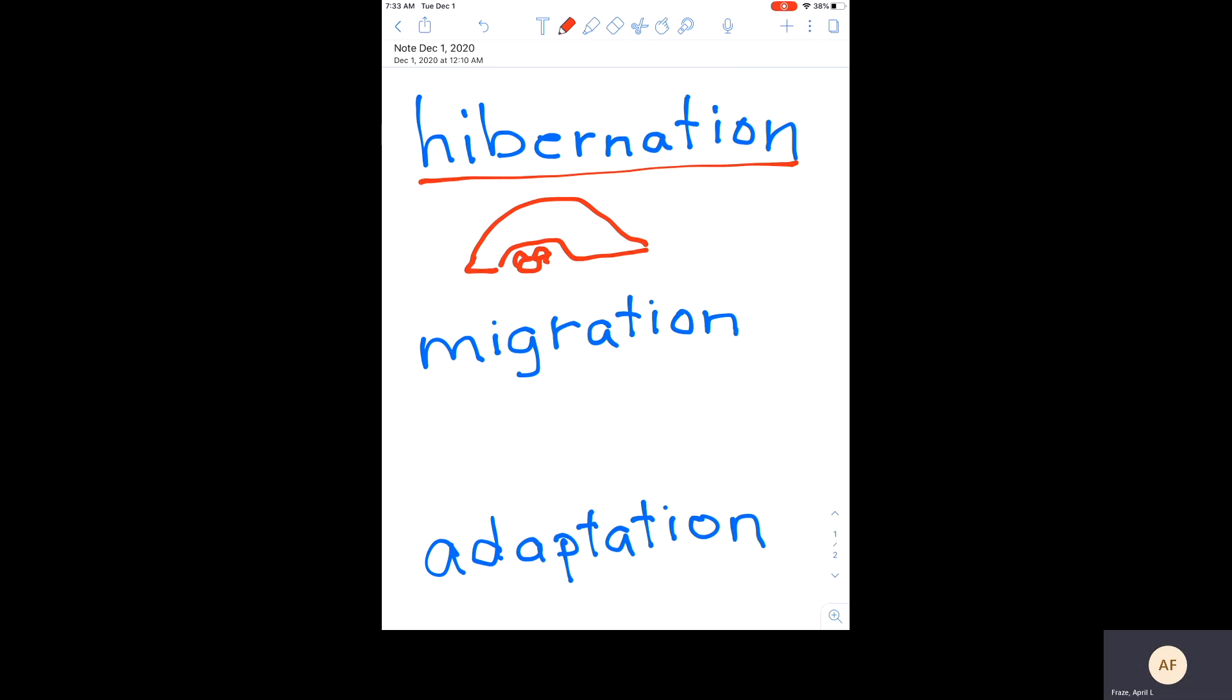The next way that animals cope with winter is through migration. If I look at the planet, remember it's shaped like a big sphere, and we know that it has the North Pole and the South Pole.